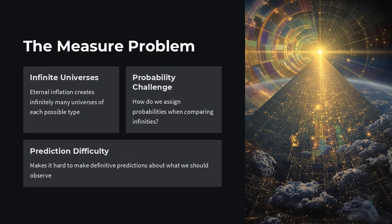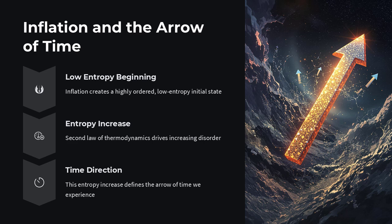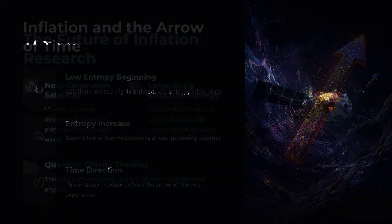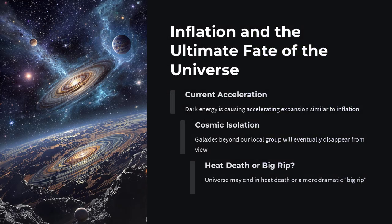What if inflation didn't happen? Without that super fast growth spurt, the universe would look wildly different. Distant regions would bear no resemblance to one another, and the CMB would be mottled with temperature swings of tens of degrees instead of millionths. Galaxies might never form, because there'd be no primordial blueprint of density fluctuations to seed structure.